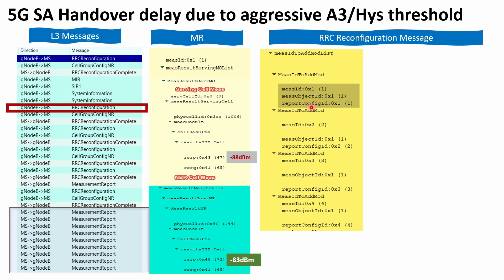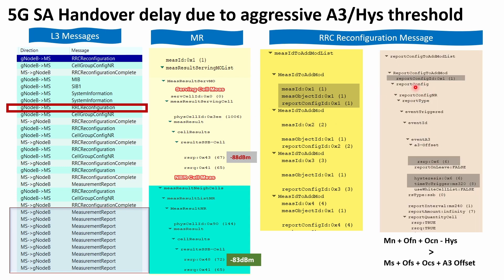The last step is to go back through the RRC configuration message and check which event report configuration ID one corresponds to. This information is found under the report configuration to add/mod list. As you can see here, it mentions report configuration NR, report type event-triggered, and then shows that this is event A3. It also gives all the related parameters such as A3 offset, hysteresis, time-to-trigger, and so on.